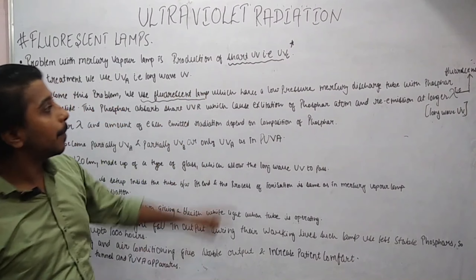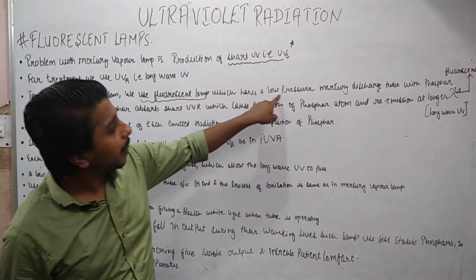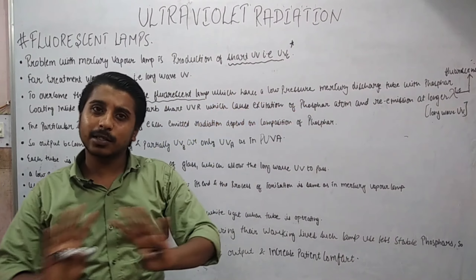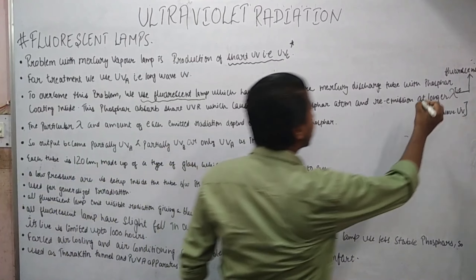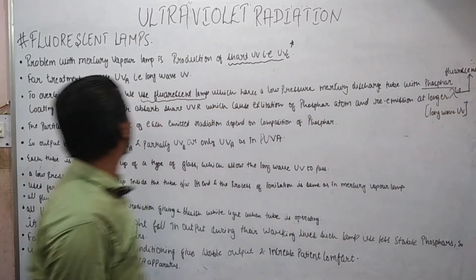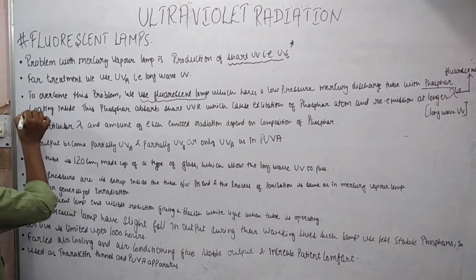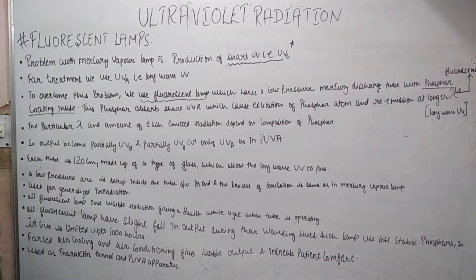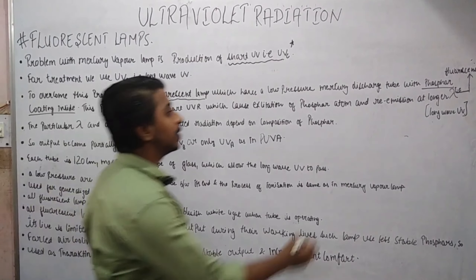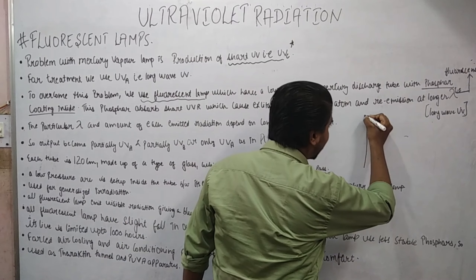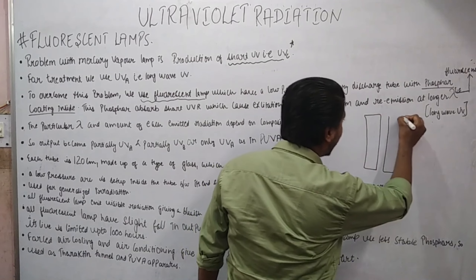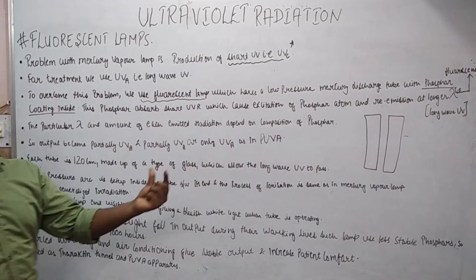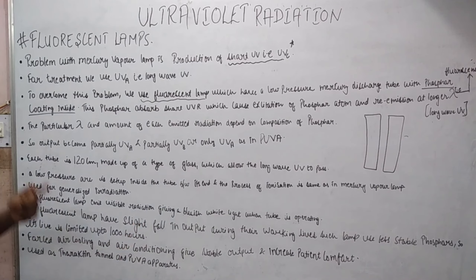We use the fluorescent lamp which has a low pressure mercury discharge tube. This is important: it has a phosphor coating inside. It has a tube which is 120 cm in length, and inside the coating is phosphor.